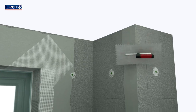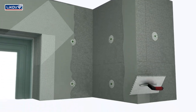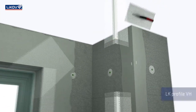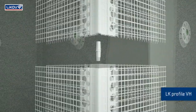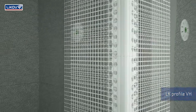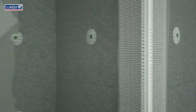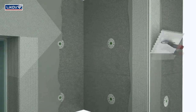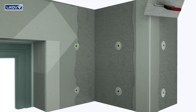Another variant of the corner bead is LKVH, which can be pegged together. The edge of these beads is visible after the completion of the plaster.